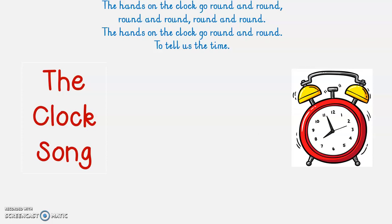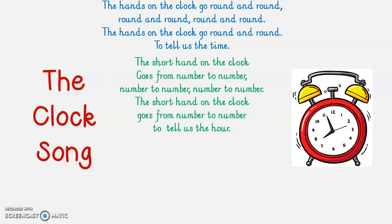The hands on the clock go round and round, round and round, round and round. The hands on the clock go round and round to tell us the time. The short hand on the clock goes number to number, number to number, number to number, to tell us the hour.